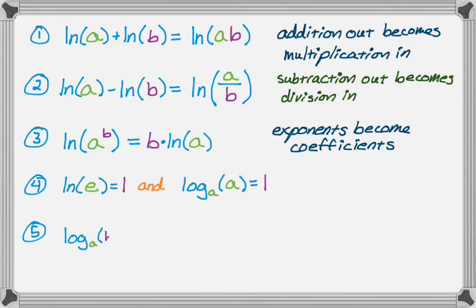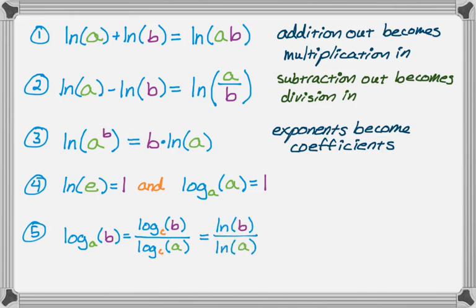A fifth property: the log of B in base A is actually equal to the log of B in base C divided by the log of A in base C. More commonly, you end up doing the natural log of B over the natural log of A. This is known as the change of base formula. You end up using this in calculus — if logs come up and they aren't in base E, you'll use it almost every single time.